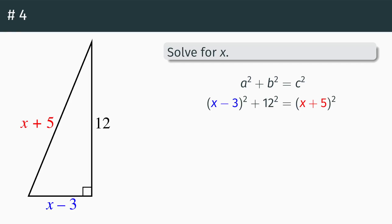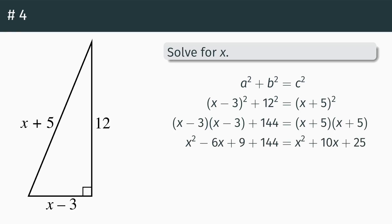From here it's just algebra. (x minus three) squared is x minus three times x minus three, 12 squared is 144, and (x plus five) squared is x plus five times x plus five. Expanding: x minus three times x minus three gives x squared minus six x plus nine, bring down the plus 144. On the right side, x plus five times x plus five gives x squared plus ten x plus 25.